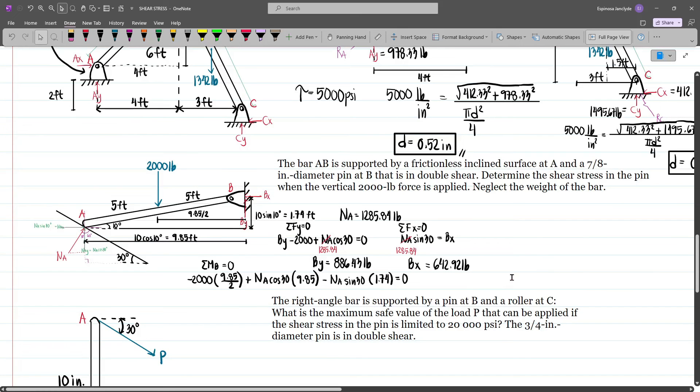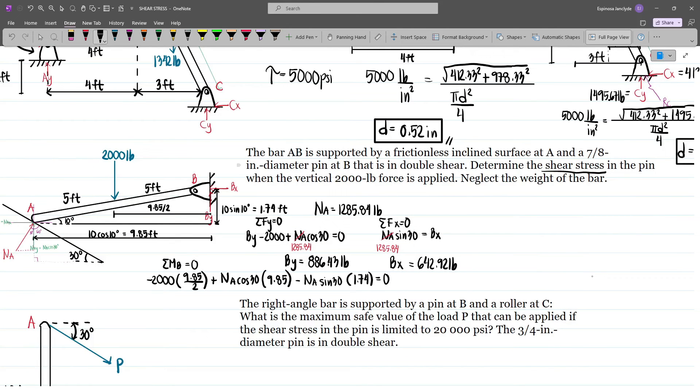And so now we already have what we need. Again, we are to determine the shear stress. And so tau is equal to the force which is the resultant at B. Now our RB is just square root of Bx squared plus By squared.